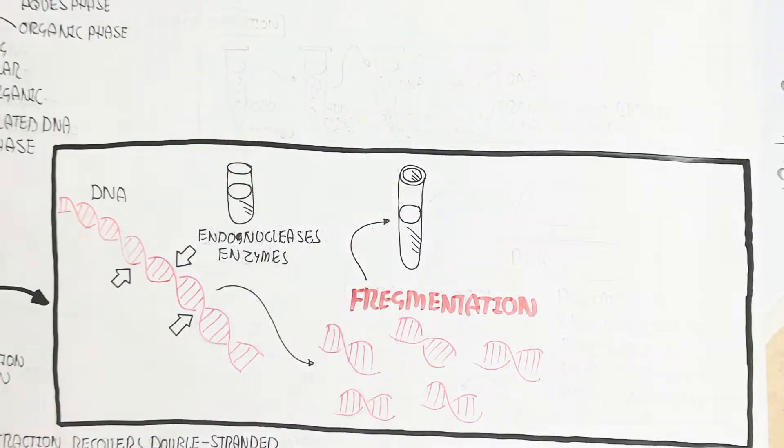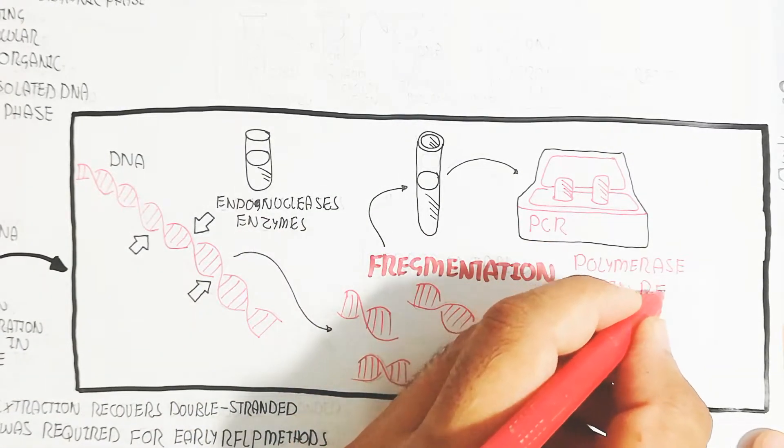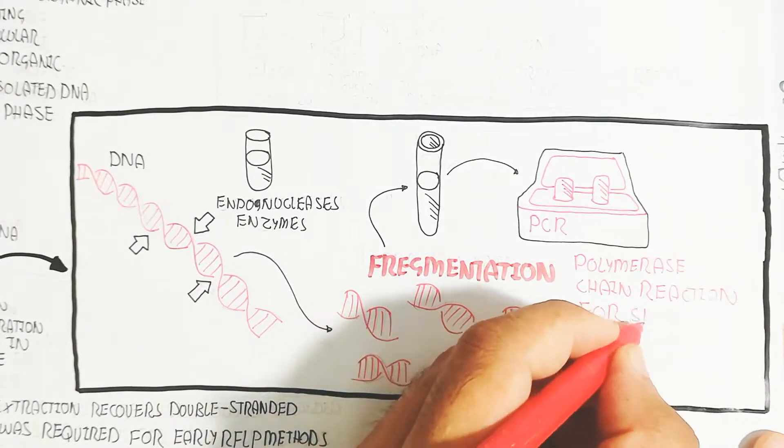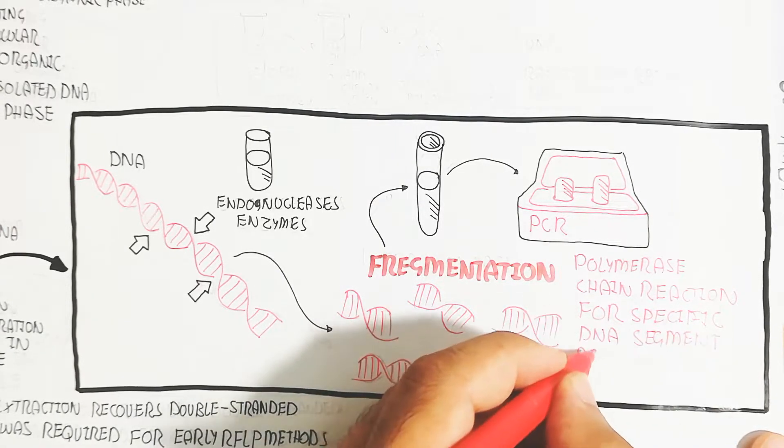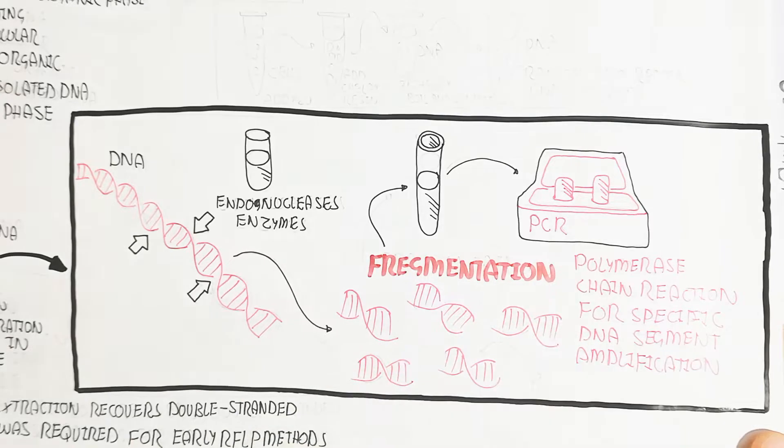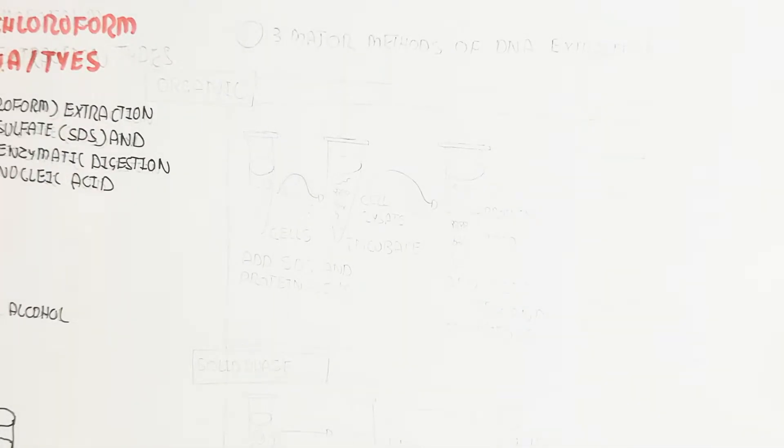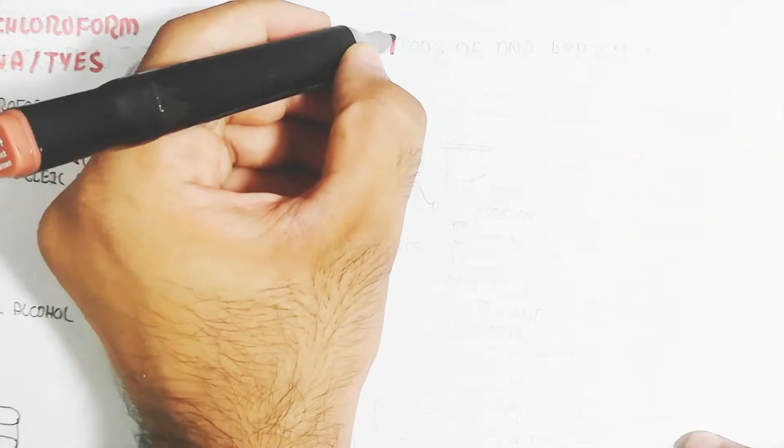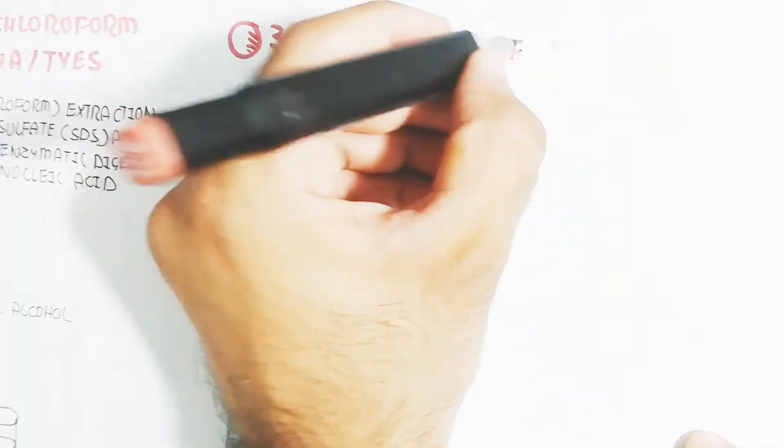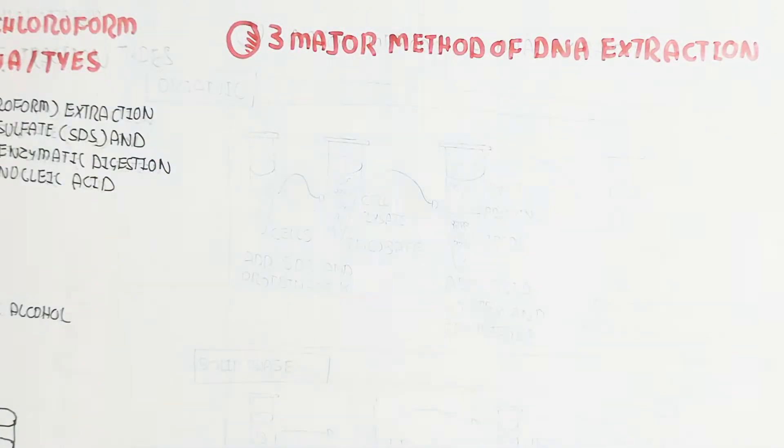We can use specific primers for annealing and extension leading to amplification in the PCR for the desired segment of the DNA. For example, the insulin producing gene amplification in the whole genome. The specific primer can be used for amplification of that gene for insertion or for a biotechnological process.